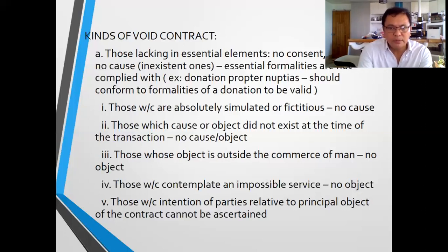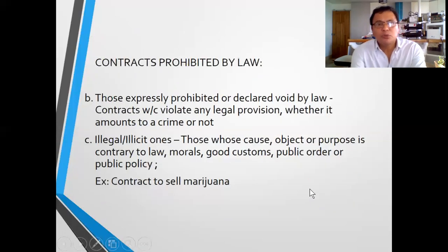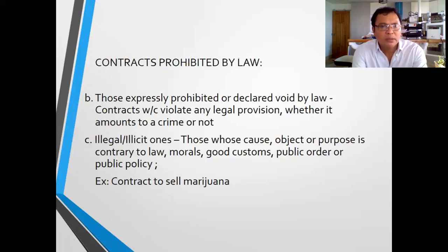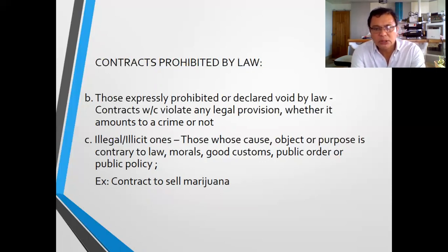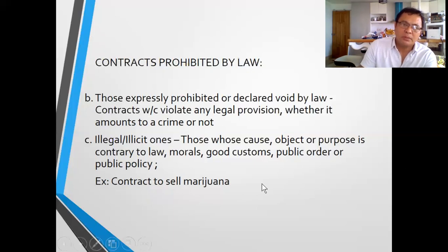And lastly, those where the intention of the parties relative to the principal object cannot be ascertained. There are also contracts which are prohibited by law — those expressly prohibited and declared void by law. These contracts violate any legal provision, whether it amounts to a crime or not. And those which are illegal or illicit — like those whose cause, object, or purpose is contrary to law, morals, good customs, public order, or public policy. For example, a contract to sell or buy marijuana is a prohibited contract.